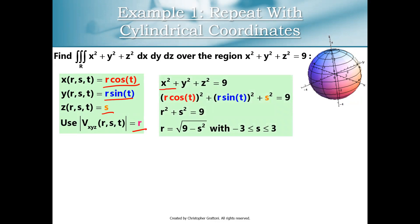Now, if I take the equation for this sphere of radius 3, x squared plus y squared plus z squared is equal to 9. If I plug in my x of RST, y of RST, and z of RST, well, plug in R cosine t for x, R sine t for y, and s for z. And using the Pythagorean identity, I get R squared plus s squared is equal to 9. Now, if you were to solve this for R, you would get the square root of 9 minus s squared. And we know that s is going to go from negative 3 to 3.